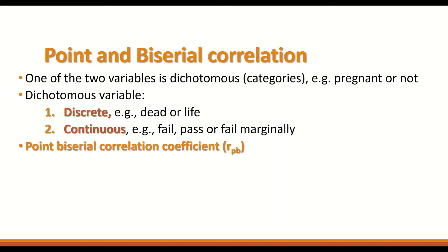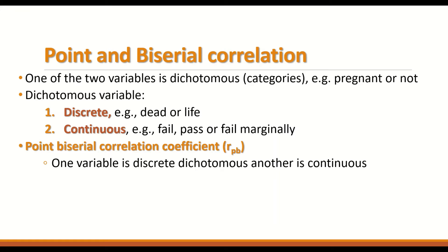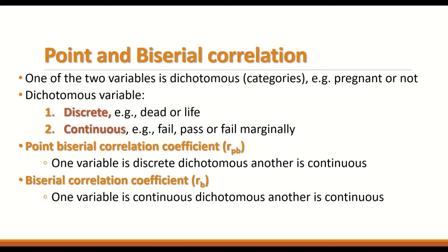So there are two tests. In the Point Biserial Correlation Coefficient, one variable is discrete dichotomous and the other is a continuous variable. In the Biserial Correlation Coefficient test, one variable is continuous dichotomous and the other is continuous. That is the key difference between the two tests.